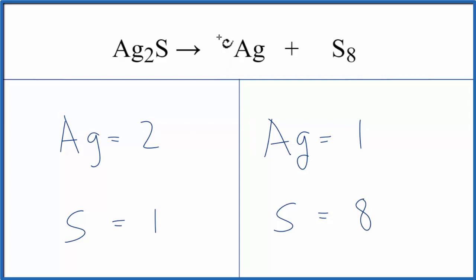Why don't we fix the silvers first? We could put a two here, the one times the two. That gives us two silvers, so the silvers are balanced.